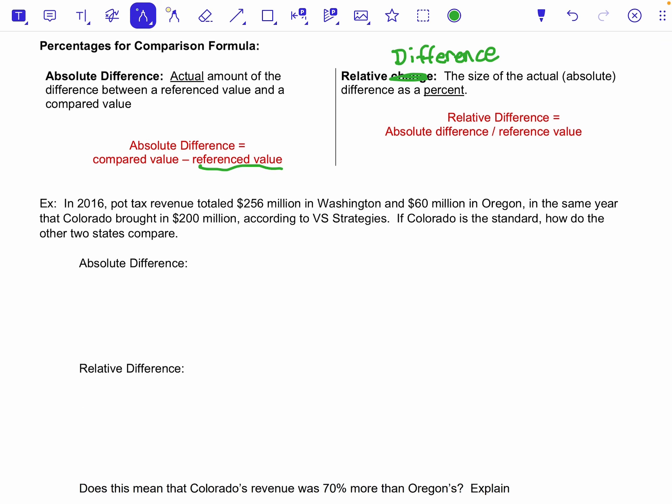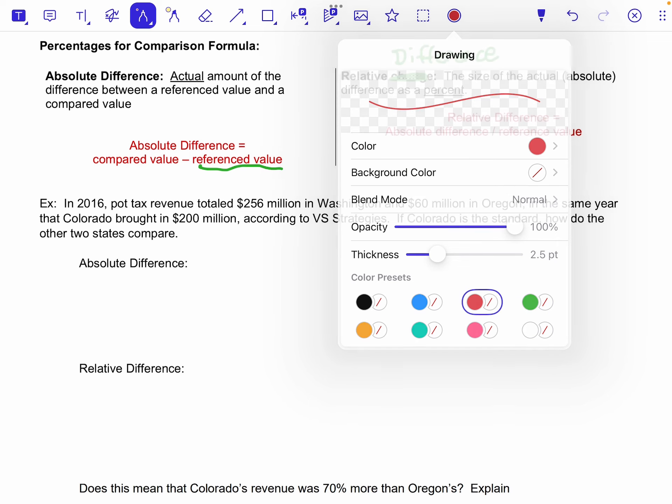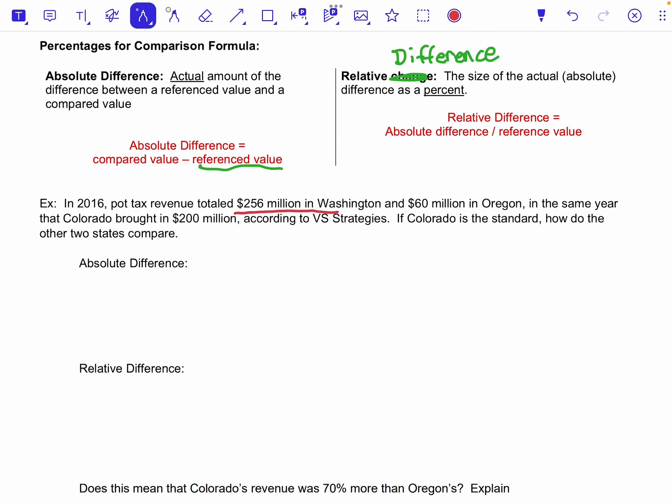All right, so we're going to look at a situation and we're going to find some relative differences and absolute differences and then think about what that means. In 2016, pot tax revenue totaled $256 million in Washington and $60 million in Oregon.